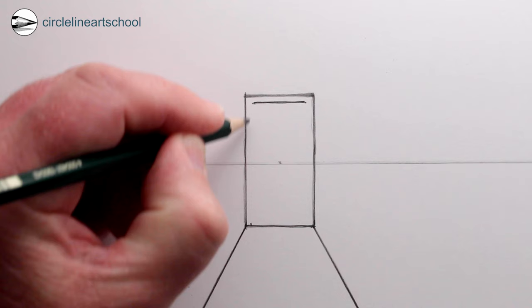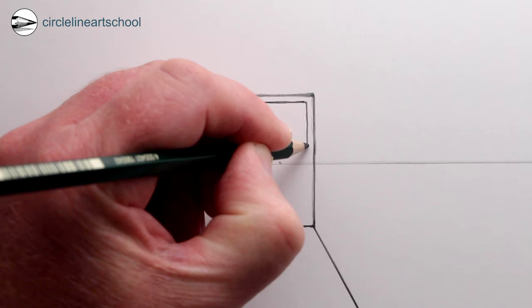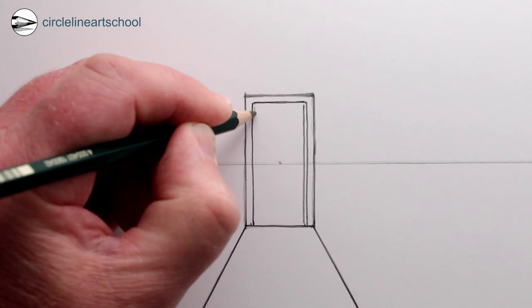Next we can draw the thickness around the doorframe, on the top, the left and the right side of the doorframe, but not the base. You could add an extra set of lines to the thickness too.